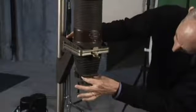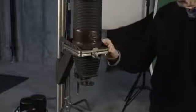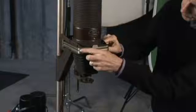The enlarger has a lens with apertures so that you can control the amount of light and focus it, and we have a slot here for putting your negative in.